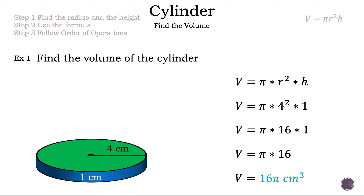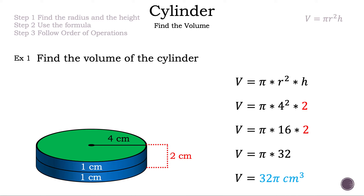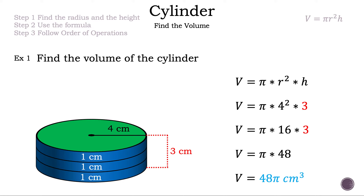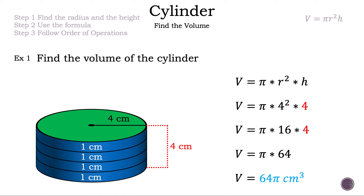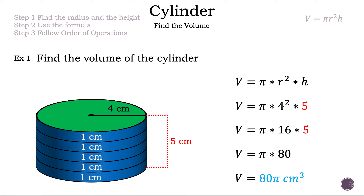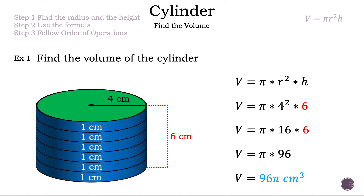Before we move on to example two, since cylinders are just an infinite number of circles stacked on top of each other, let's add another four centimeter radius circle with a height of one centimeter on top. The height went from one to two centimeters and our volume increased to 32 pi centimeters cubed. Adding more circles, the volume increases to 48, then 64, then 80, and then 96 pi centimeters cubed. Cylinders are just an infinite number of circles stacked on top of each other.